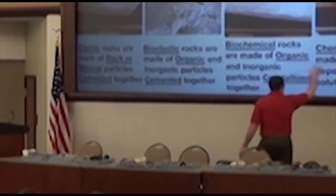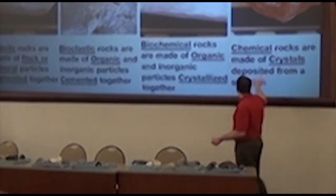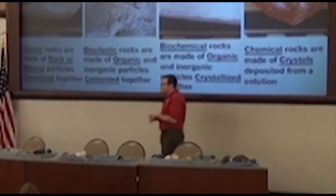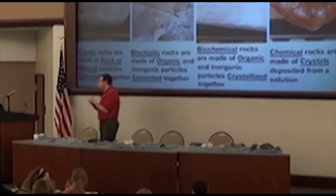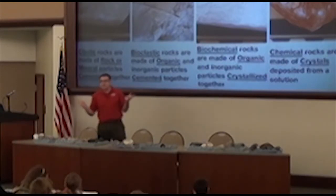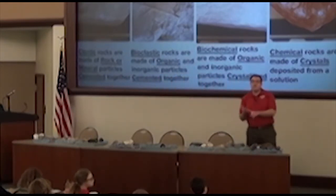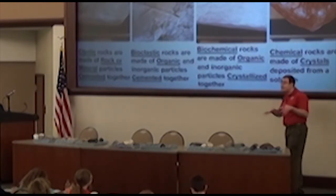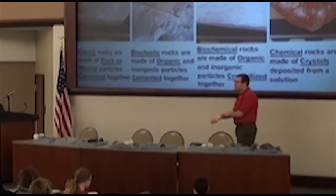The other end of the spectrum is chemical sedimentary rocks. Chemical sedimentary rocks are made of little crystals deposited from a solution — instead of being made of pebbles and pieces stuck together. Some examples are halite and gypsum, which are often considered chemical sedimentary rocks, depending on how they formed.